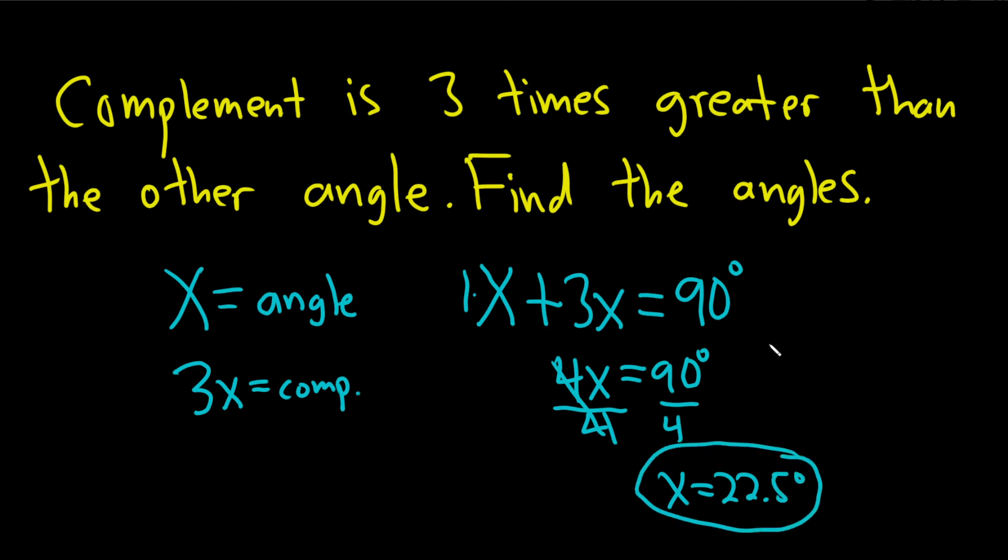So that's one of them. To find the other one, you just do three times that. Three times 22.5 degrees. Let me do that in my calculator just to be safe. I got 67.5 degrees. These are the angles. These are called complementary angles because they add to 90 degrees.